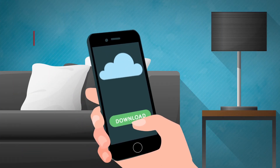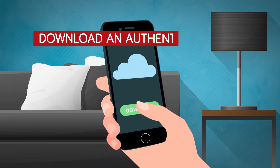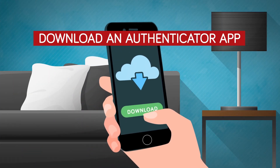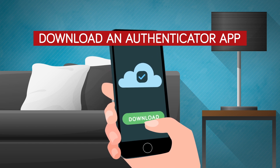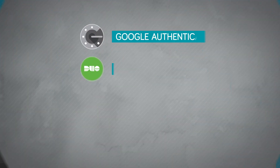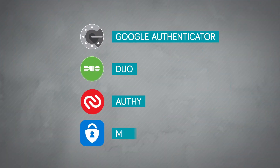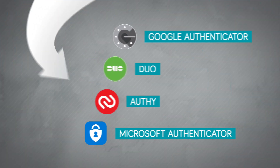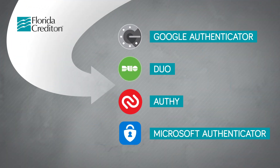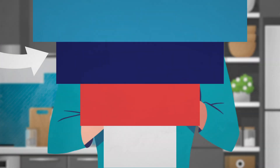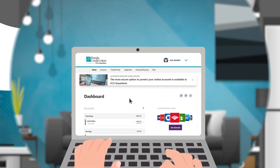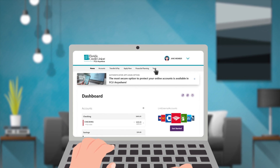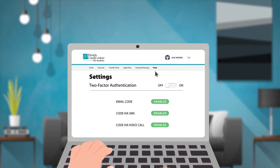To set up your authenticator with FCU Anywhere, you will first need to download an authenticator app. There are a variety of options to choose from, but here are four supported by FCU Anywhere. Once you've downloaded your app, log in to FCU Anywhere to continue the setup process.